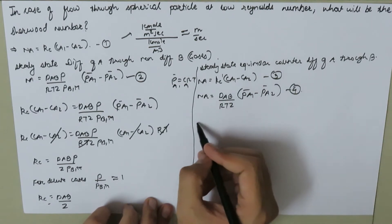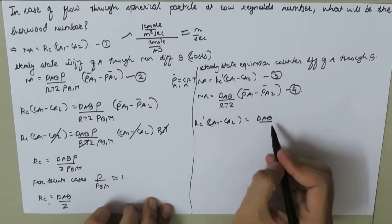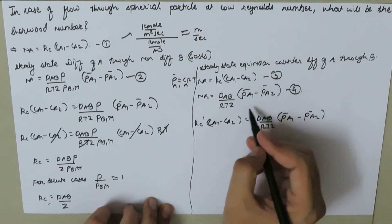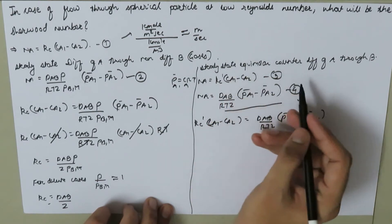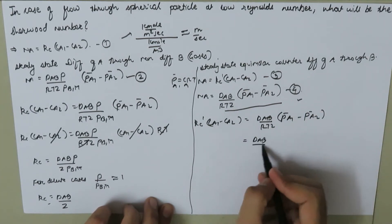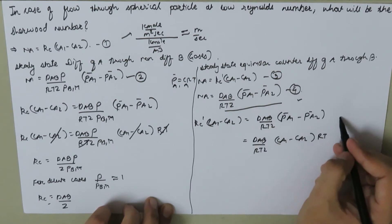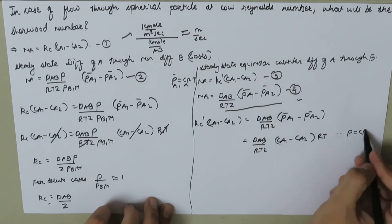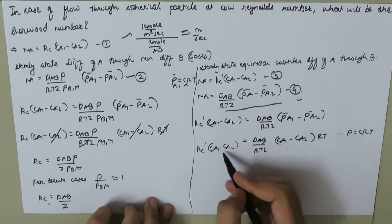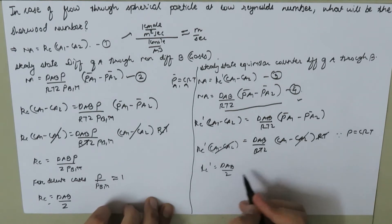Let's call this equation number four. Equating both equations, we know Kc prime times (C1 minus C2) equals DAB divided by RTZ times (PA1 bar minus PA2 bar). If you don't know this equation, watch my previous video. We can rewrite as DAB over RTZ times (CA1 minus CA2), and since P equals CRT, taking RT as common, the RT terms cancel, so Kc prime equals DAB over Z.